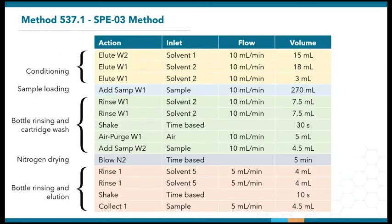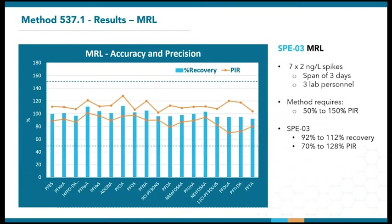Here's the built-in EPA Method 537.1 on the SPE03. It's quite similar to Method 533, but uses a faster sample loading speed of 10 ml per minute. The extraction time for 8 samples is only 75 minutes. The minimum reporting level (MRL) was determined by extracting 7 replicates of 2 ng per liter lab spikes on the SPE03, performed by 3 different lab personnel over a span of 3 days. The method mandates that the prediction interval of results (PIR) has to be between 50% to 150%, as shown by the dotted lines. PIR refers to the average recovery plus or minus the half range. All recoveries at this low level were between 92% to 112%, and the PIRs were between 70% to 128%, so the lab can confidently go with 2 ng per liter as their MRL.